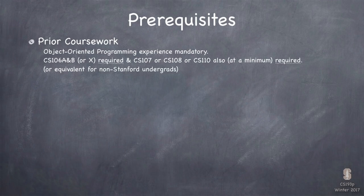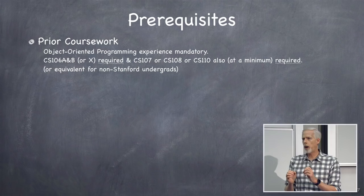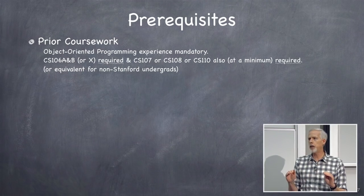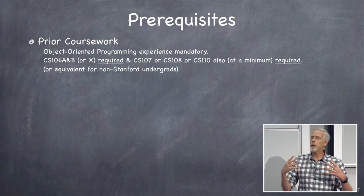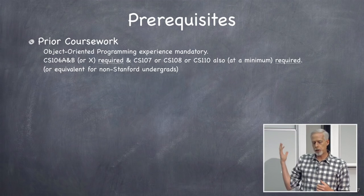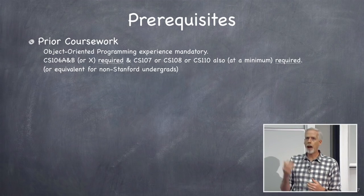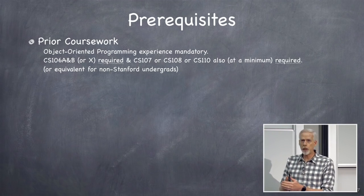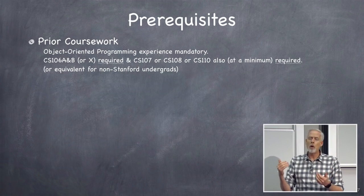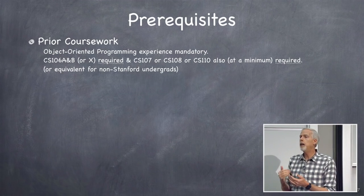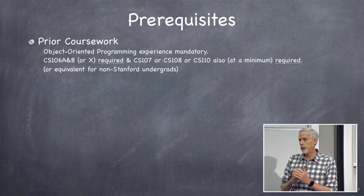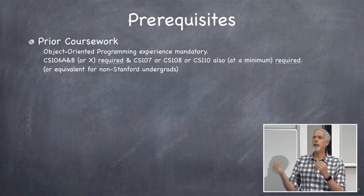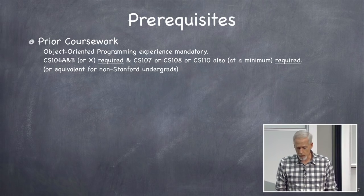Prerequisites — boiling it down really simply: the prerequisite for this class is object-oriented programming. You have to know it — I completely and utterly assume it, and not only do you have to know it, you have to have some experience doing it. Here at Stanford, CS106A and B are a hard prerequisite. Those are object-oriented programming classes. Then I want to make sure you have some programming experience — either outside of school, or CS107, CS108, or CS110. CS108 is a particularly great prerequisite; that's object-oriented programming. If you haven't taken it yet, maybe take it and then take this class the next time it's offered.